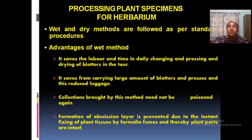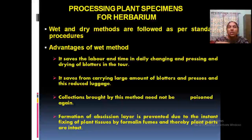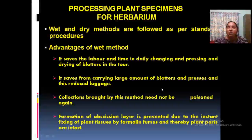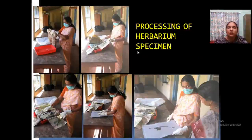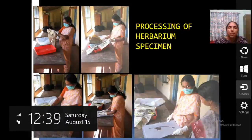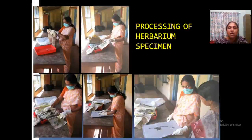There are mainly two techniques to process a plant specimen for herbarium — the wet method and the dry method. The wet method means collecting and preserving in a wet condition. Its advantages are that it saves labor and time, daily changing and pressing is not required, and it saves from carrying large amounts of blotters and press equipment in the field. Collections brought by this method need not be poisoned again to remove insects. Formation of an abscission layer is also prevented. It is a very simple technique. The steps include collecting in paper bags, spreading, and mounting under weight on herbarium sheets.